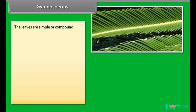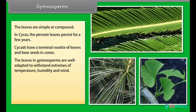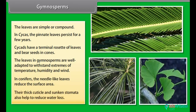The leaves are simple or compound. In cycas, the pinnate leaves persist for a few years. Cycads have a terminal rosette of leaves and bear seeds in cones. The leaves in gymnosperms are well adapted to withstand extremes of temperature, humidity, and wind. In conifers, the needle-like leaves reduce the surface area, and their thick cuticle and sunken stomata also help to reduce water loss.